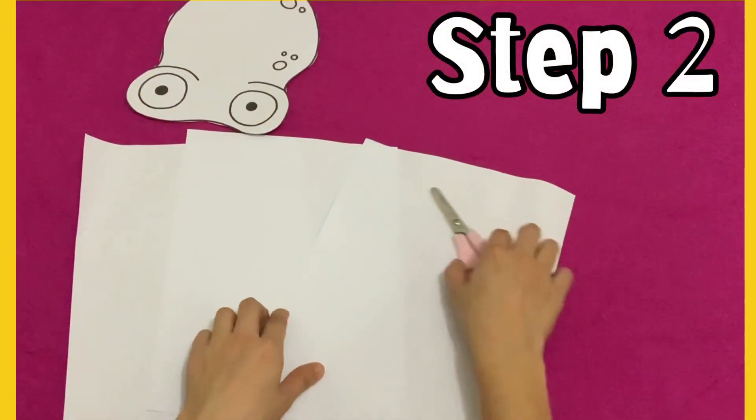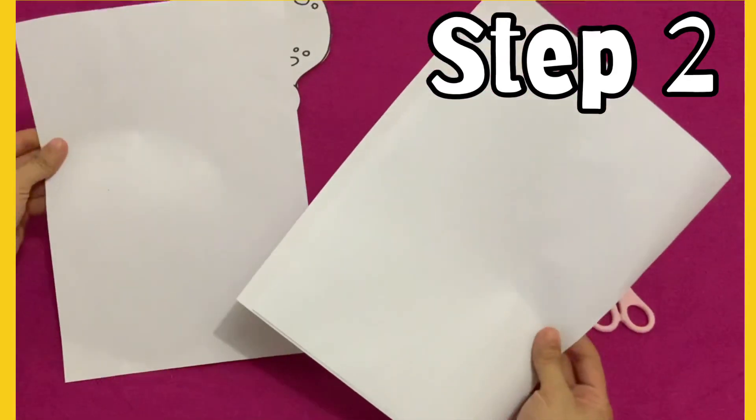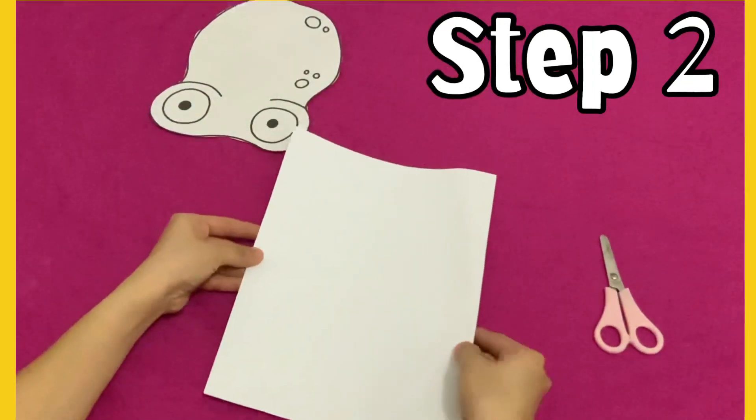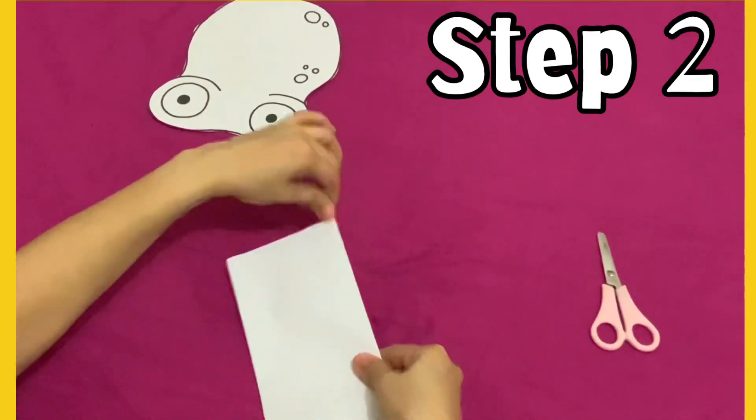For step number two, we are going to use these three white sheets of paper. So you're going to stack them on top of each other and then we're going to fold it lengthwise just like this. It looks like a tall building. Press.